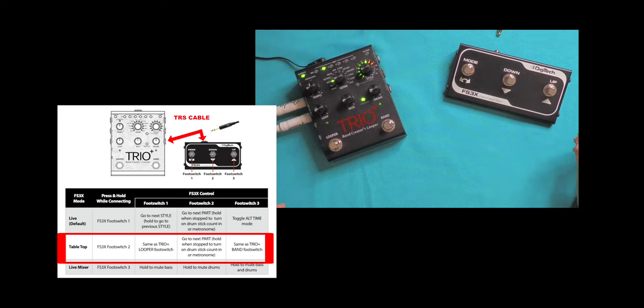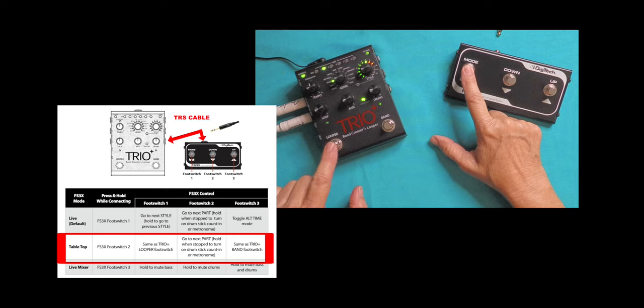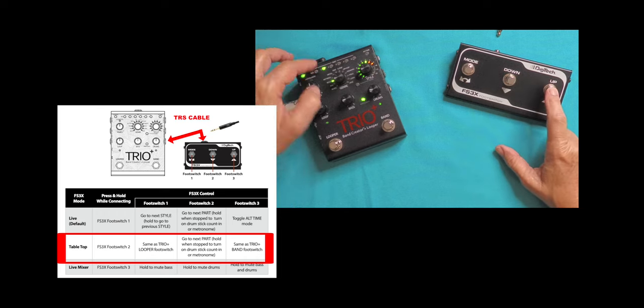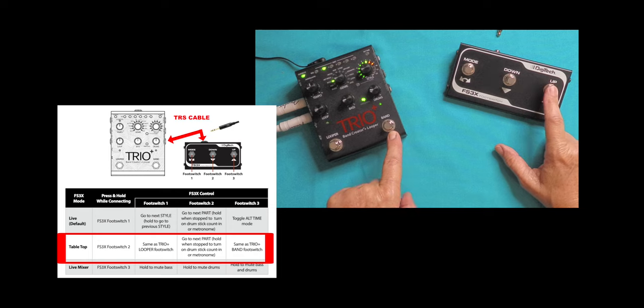In the second mode, it's tabletop, and this mode will react the same as your looper switch. This button will go to the next part, and this button will be the same as using your band foot switch.